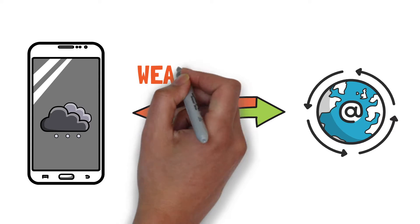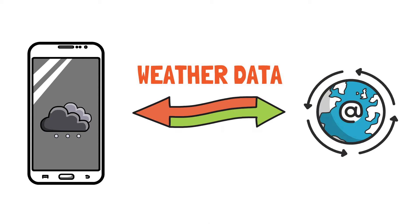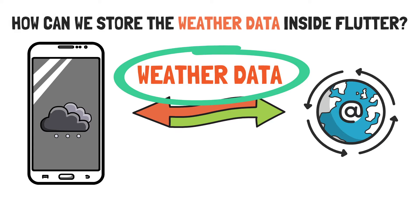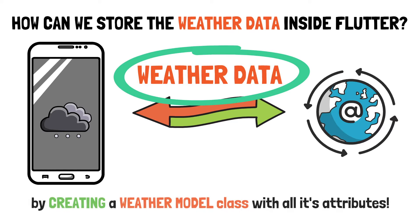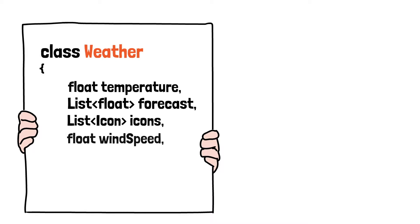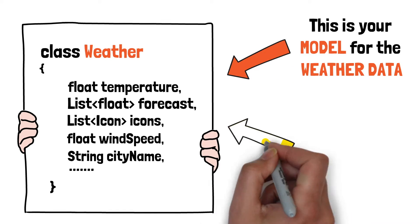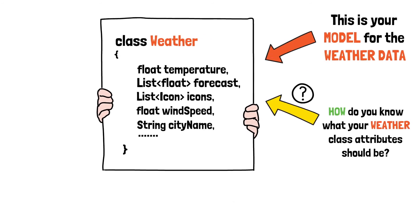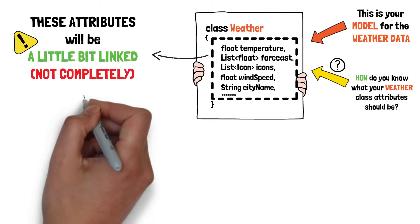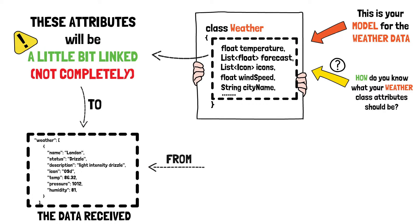The data it will be fetching from the internet is going to be mainly weather data. This data needs to be stored somehow inside your application. Simply by creating a class for the specific data — in this case, we'll have a weather class. In this class, we'll need to set up specific attributes like temperature, forecast, weather icons, wind speed, city name, and so on. But how do you know which attributes your class should have? You need to be sure that these attributes will be a little bit linked — not completely — to the data that will be received from the data source.